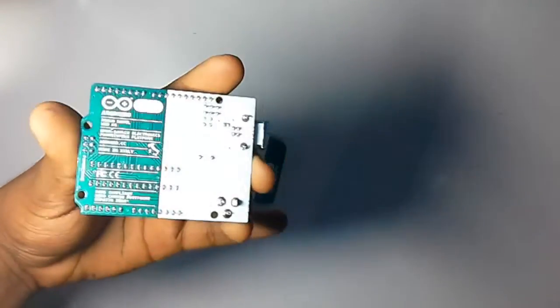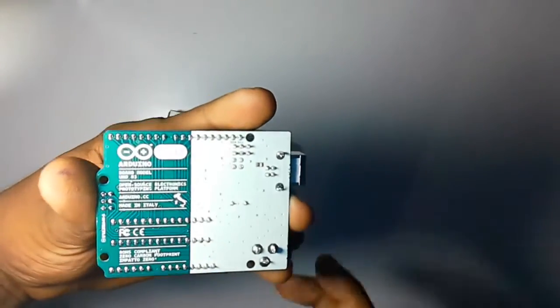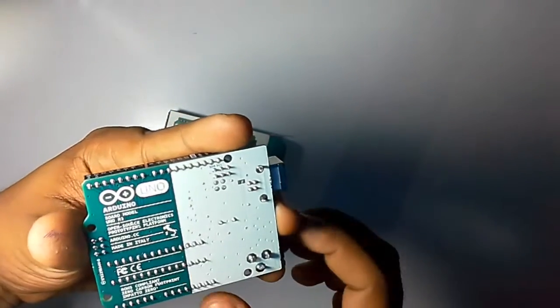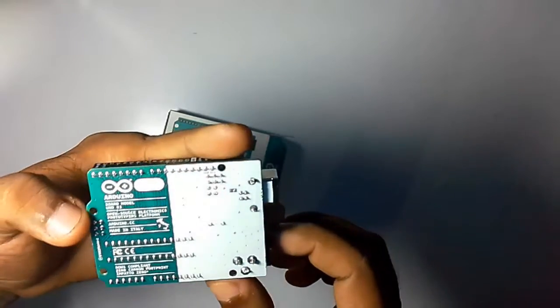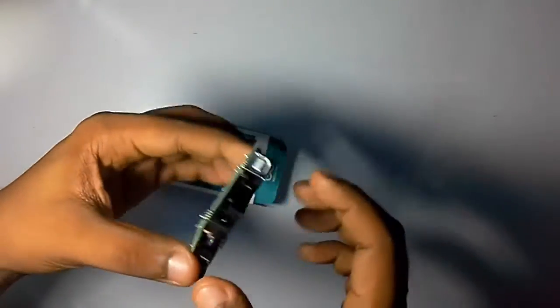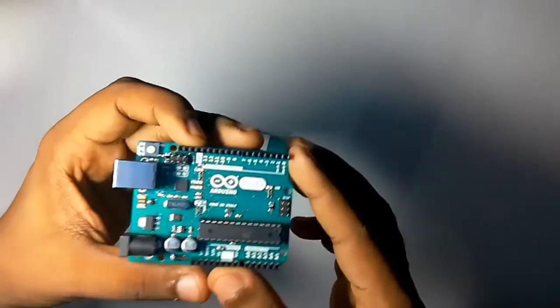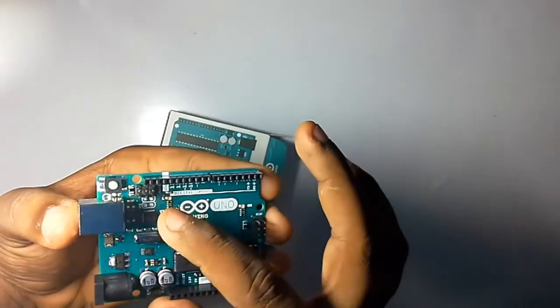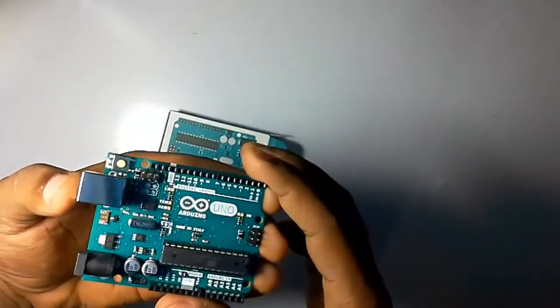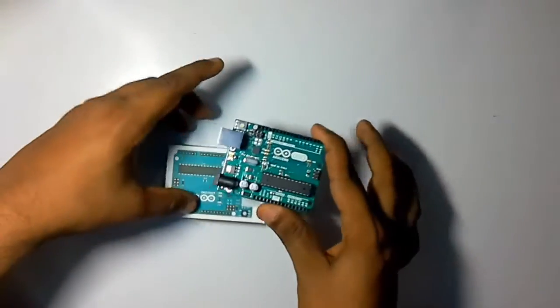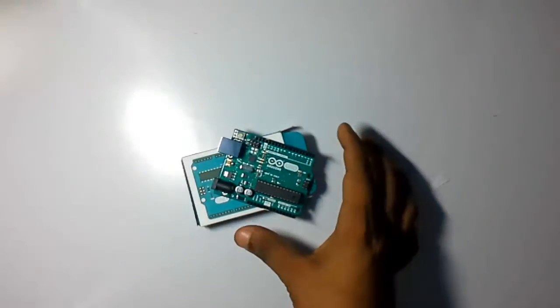On the back side you have more details about the Arduino, including a little map of Italy, the Arduino Uno logo, and the pin 13 LED.